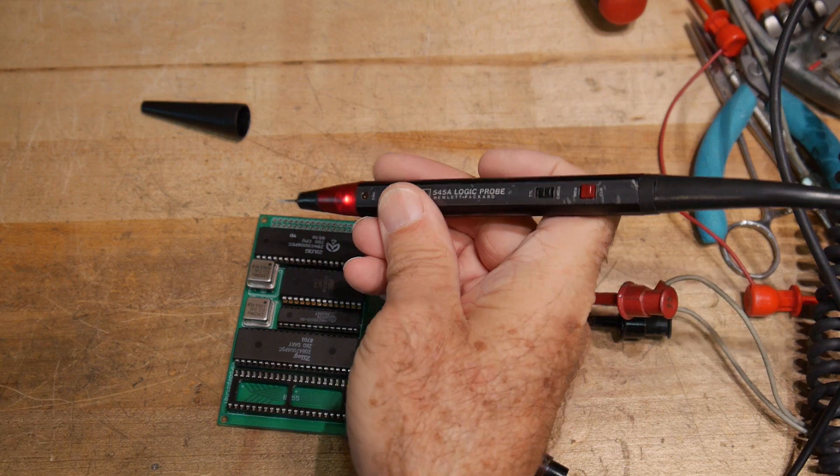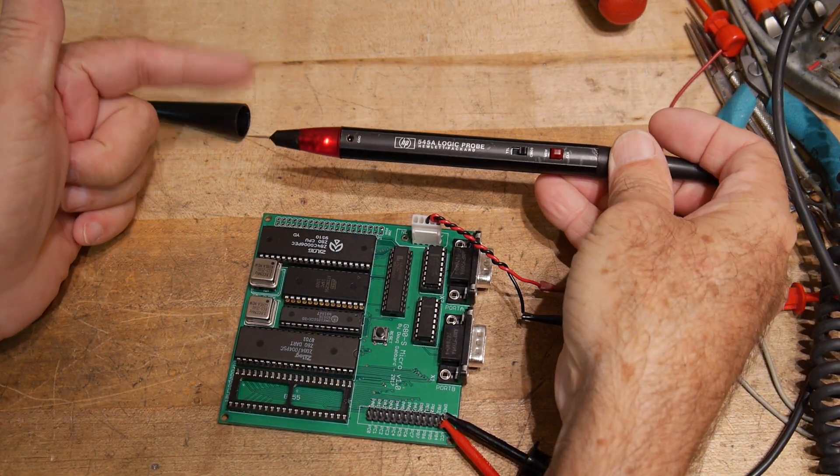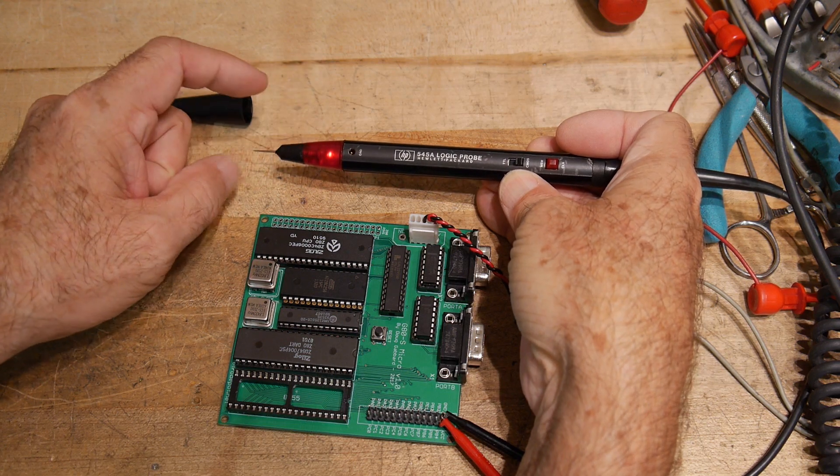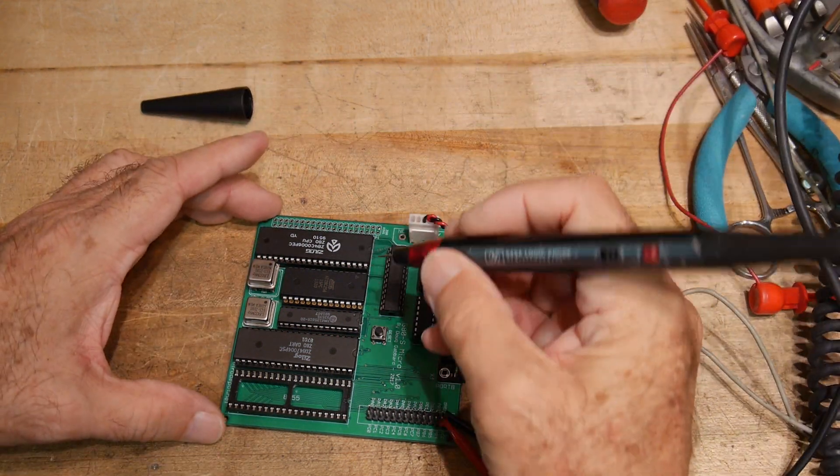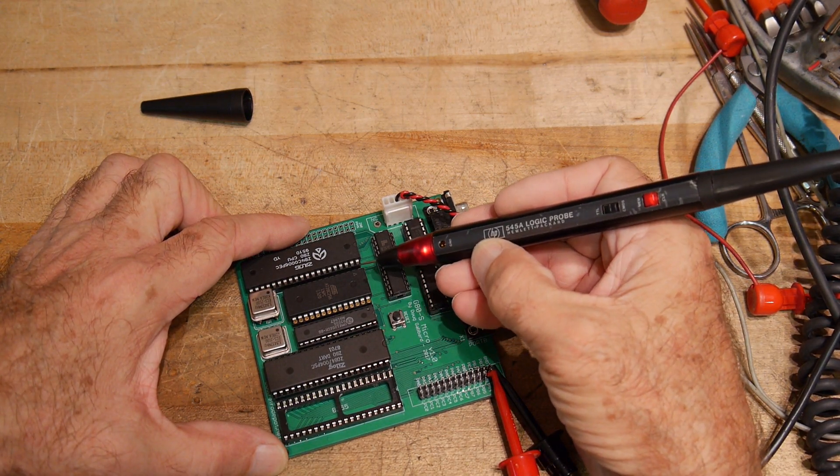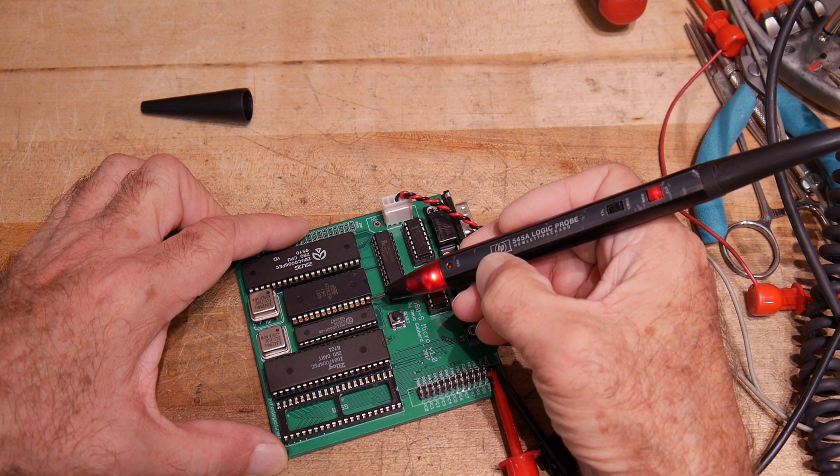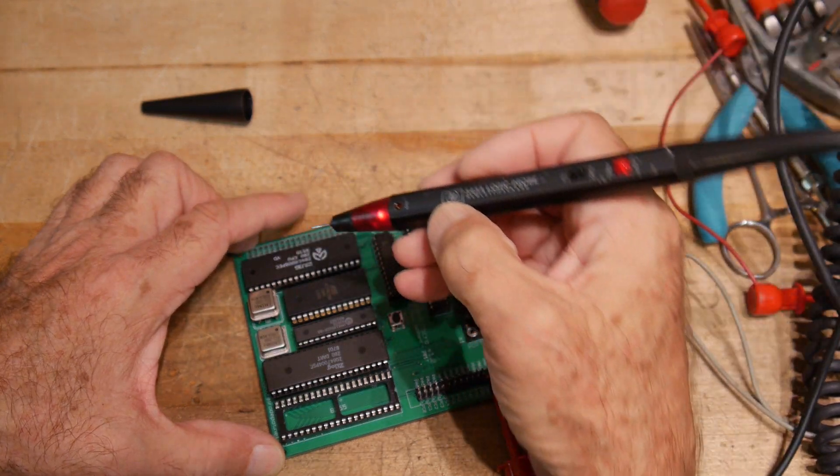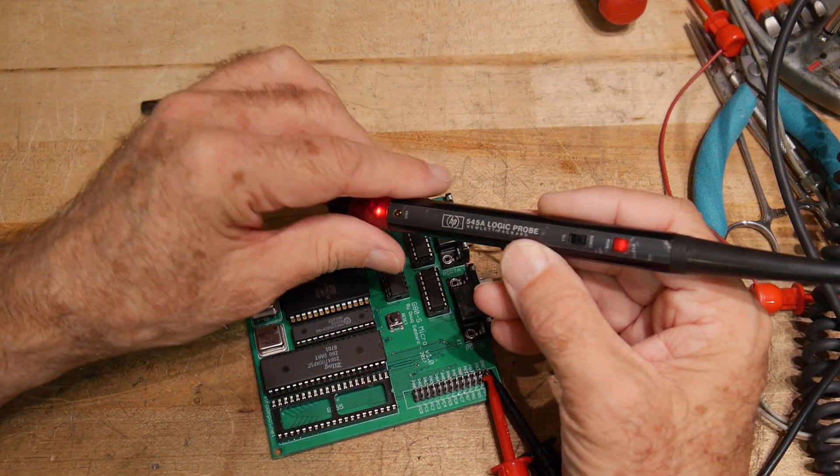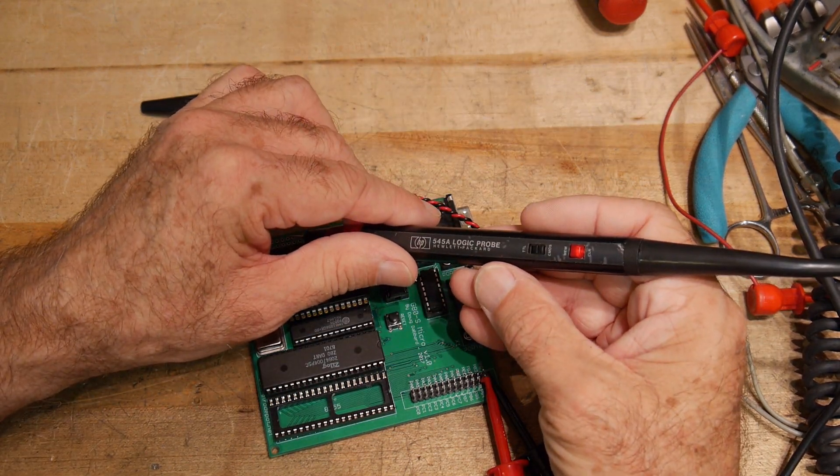The way these things work is they have threshold settings for voltage. If it's more than the threshold it'll light high, you can see it go from a medium state to a bright state. If you find a ground somewhere it goes off, so it'll tell you if it's high or low or tri-stated. You can set the threshold levels here with the switch, either TTL threshold levels or CMOS threshold levels.